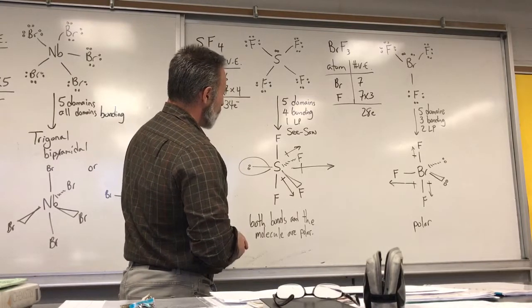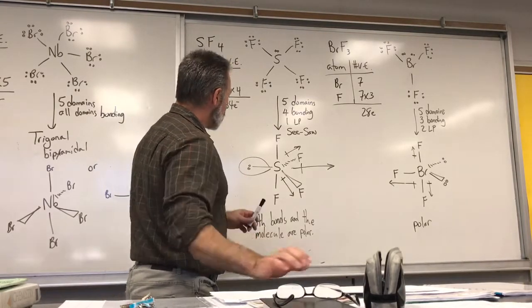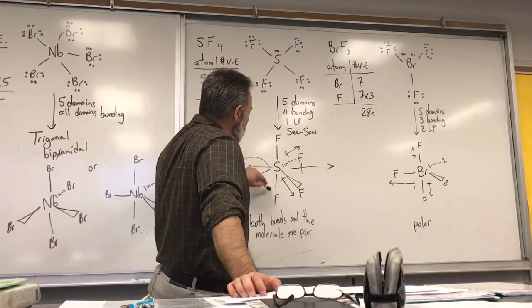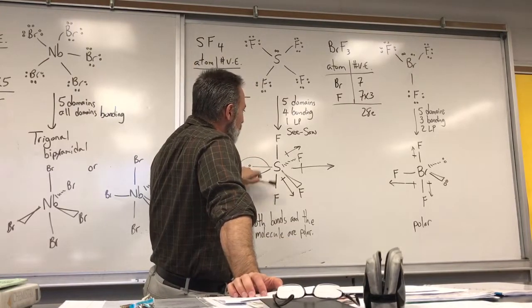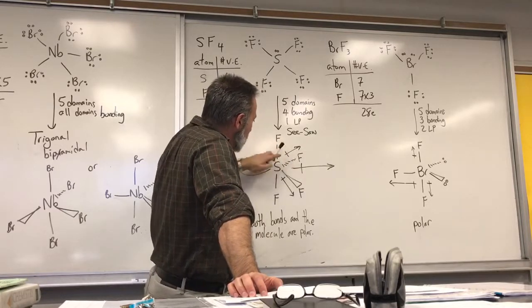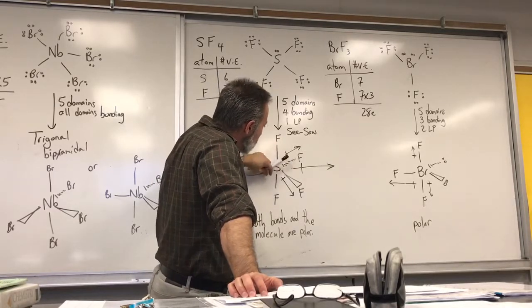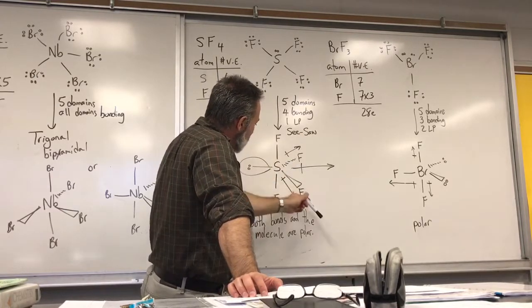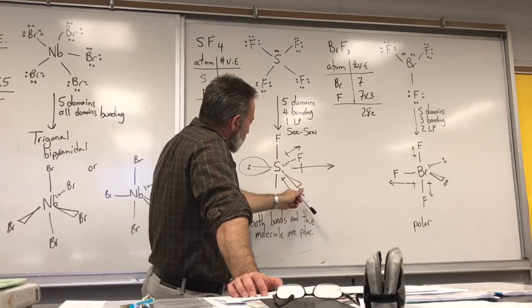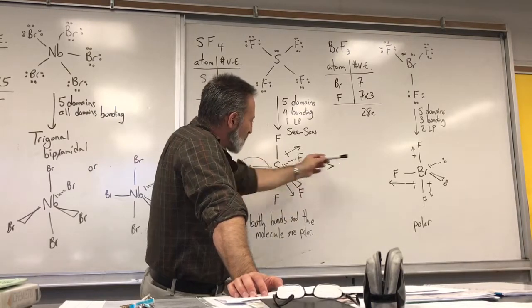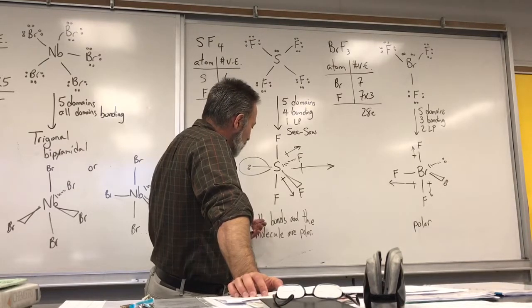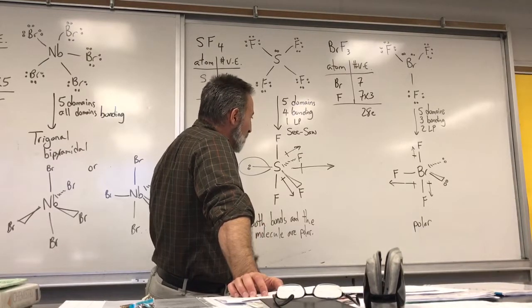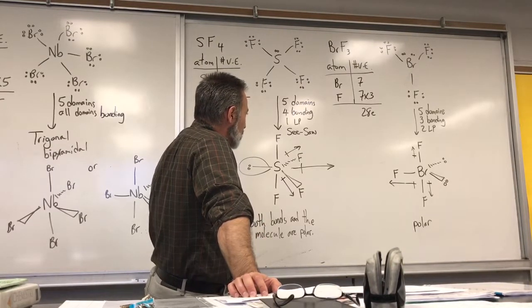If you draw the polarity of the bonds, you see that two of the fluorine atoms are opposed, so those dipoles cancel. But for the other two fluorine atoms, one dipole is pointing one way and the other dipole is pointing another way, so the resultant dipole persists. Both the bonds and the molecule itself are predicted to be polar.